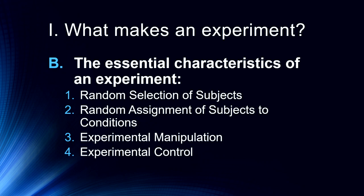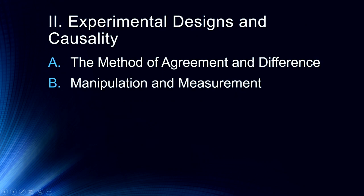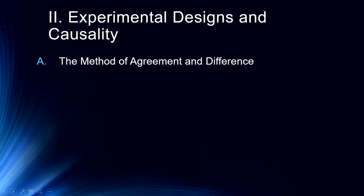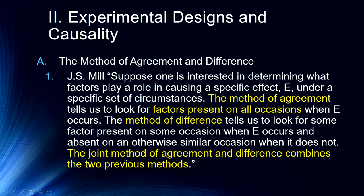The next thing we get interested in discussing is exactly how causality is established. I want to talk about the method of agreement and difference, established by John Stuart Mill, and then we'll talk about how we manipulate independent variables and measure dependent variables. According to Mill, suppose one is interested in determining what factors play a role in causing a specific effect E under a specific set of circumstances. The method of agreement tells us to look for factors present on all occasions when an effect occurs.